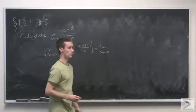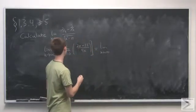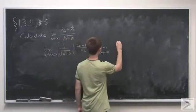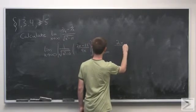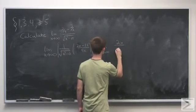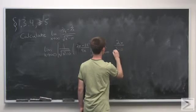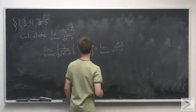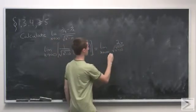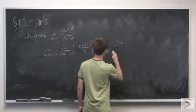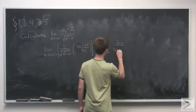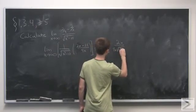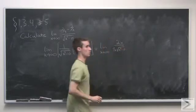So we look at the limit as x goes to infinity of 2x over square root of x squared minus 10, where—excuse me, I should also have 9x here—or 9x square root of x squared minus 10.